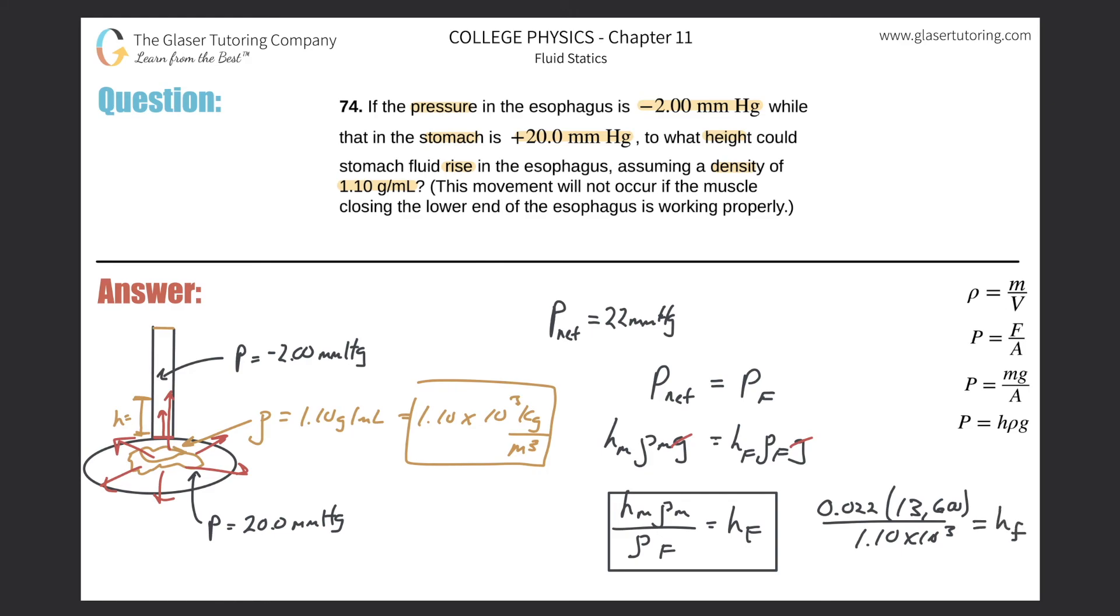So let's do it. Height of the fluid 0.022 times 13,600 divided by 1.1 times 10 to the third. And here we have a value then that the height that this fluid will reach in the esophagus will be equal to 0.272. And that will be in terms of meters.